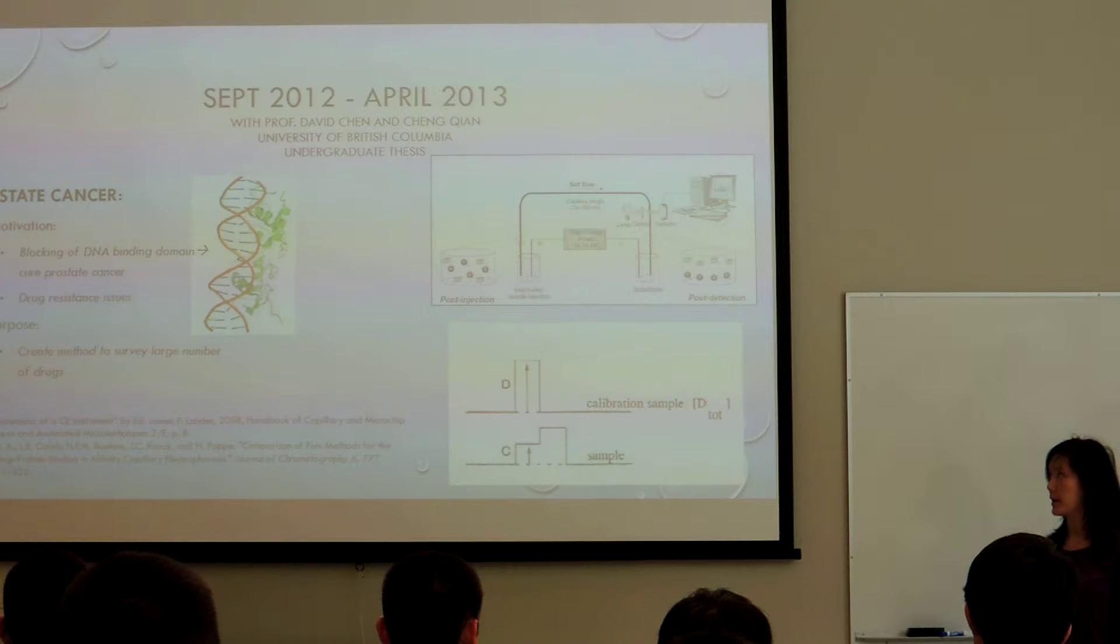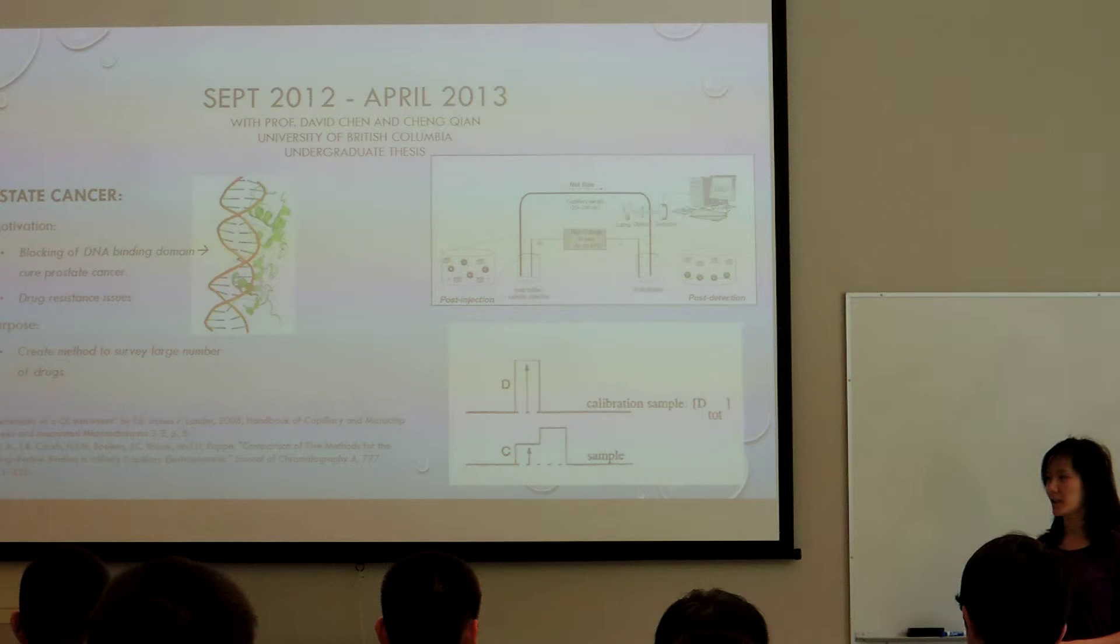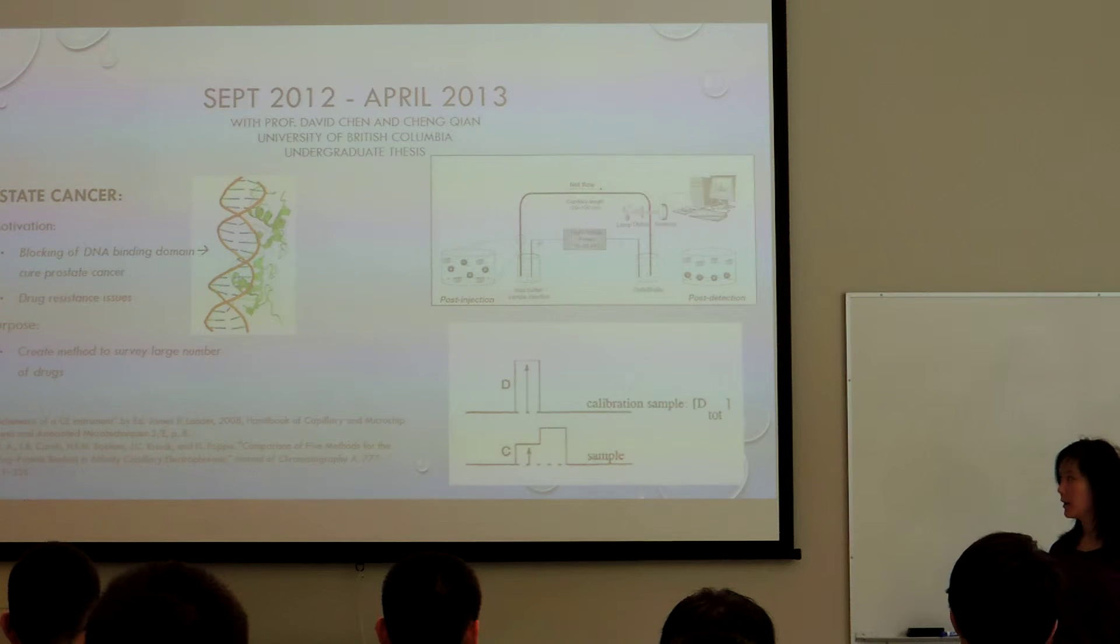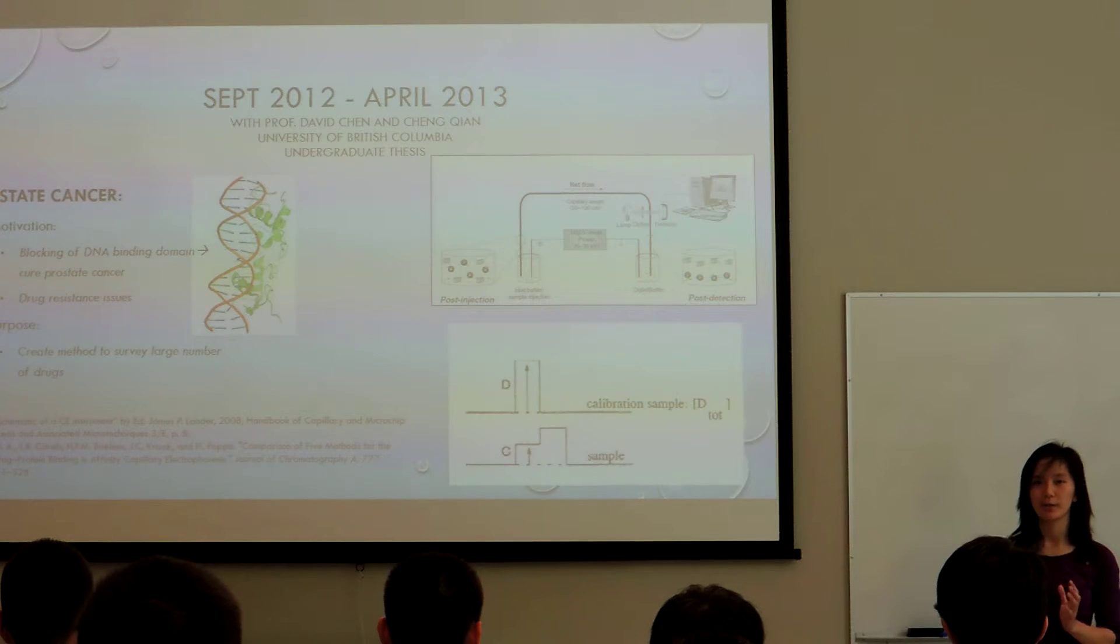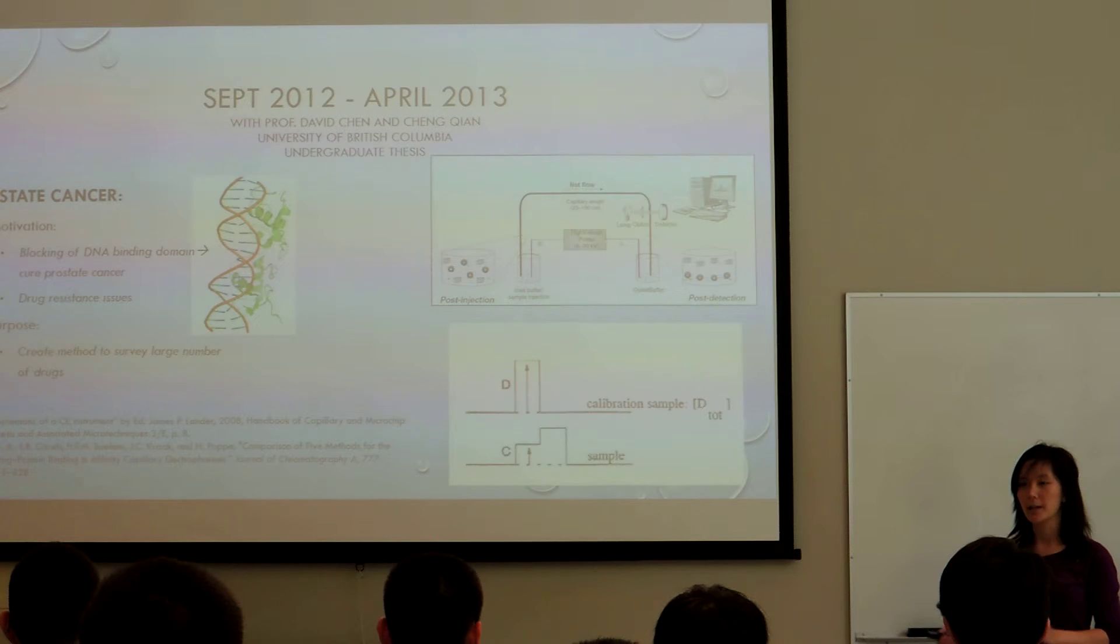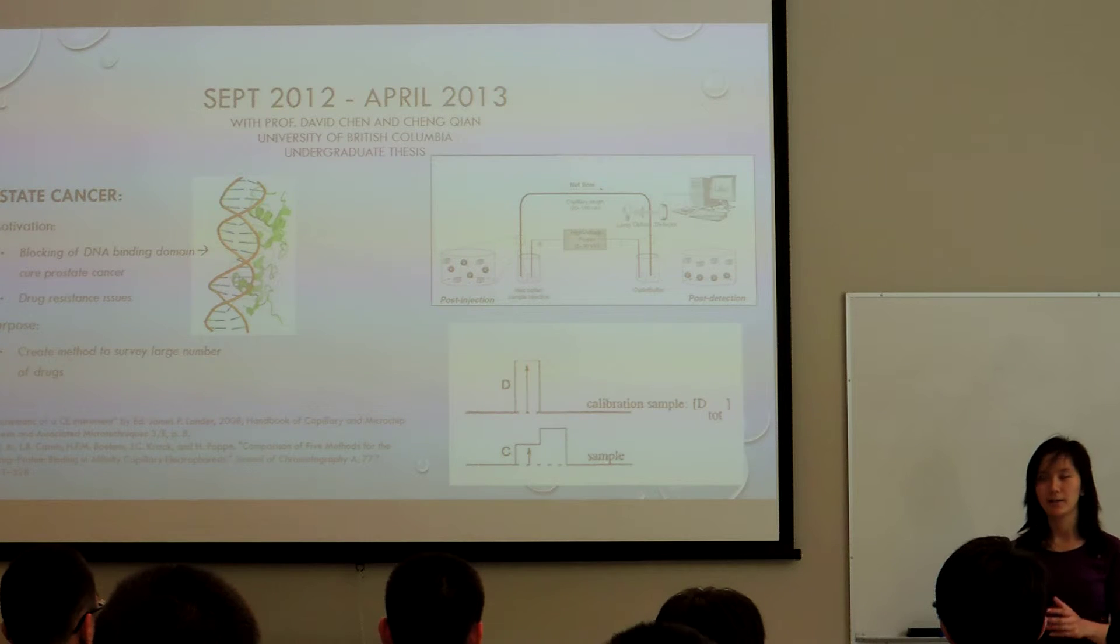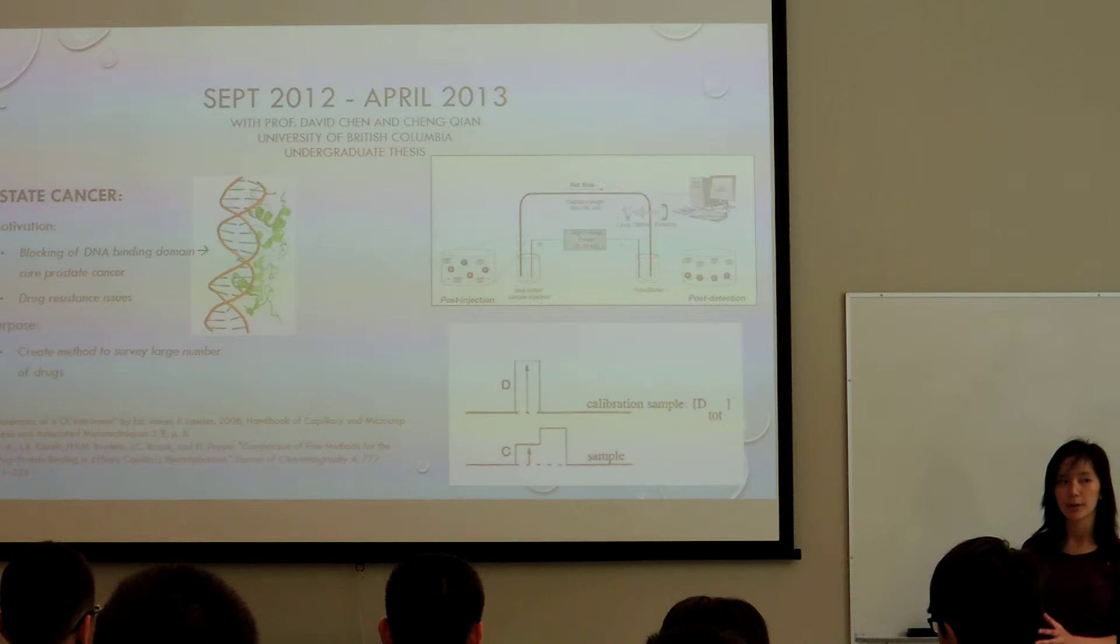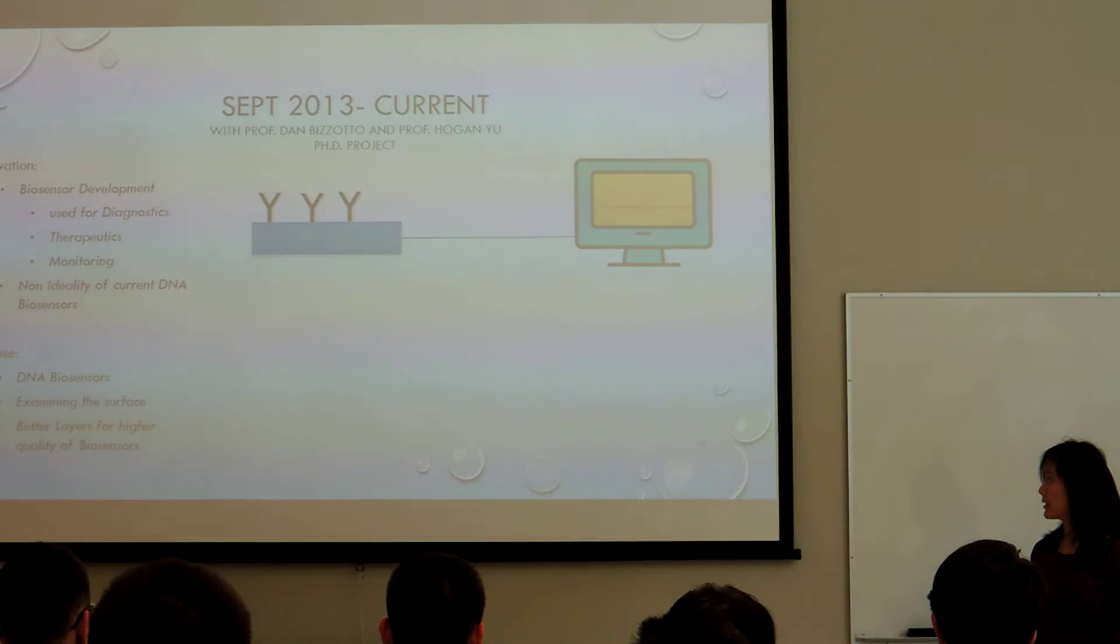I spent an entire year trying to optimize this method, and it's sort of on its way still because there's a lot of non-ideality in this case. From this, what I took in terms of my path in chemistry was that I did not want - this was a really cool project because it had to do with prostate cancer and everything - but I did not want to spend the rest of my research career learning one machine. I'd rather develop a machine myself, which is what I'm doing now in my PhD.